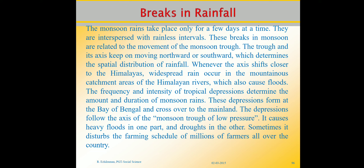Monsoons show an uncertain alternation of dry and wet spells whose intensity, frequency, and duration vary. When heavy floods occur in one part, drought is seen in another. The monsoon is often irregular in its arrival and retreat — for example, forecasts may predict it will strike Kerala, then Bombay, then Haryana on a particular date, but that date keeps changing.